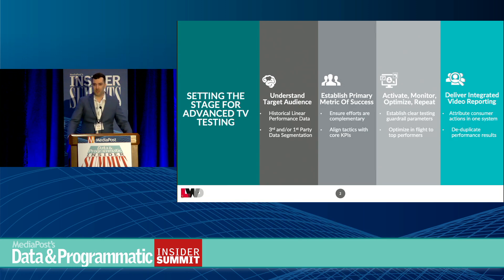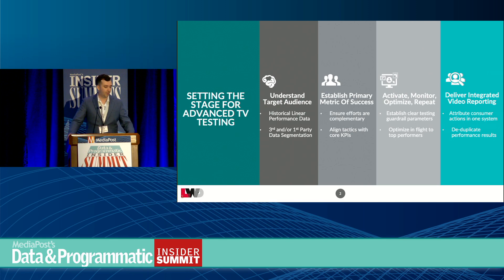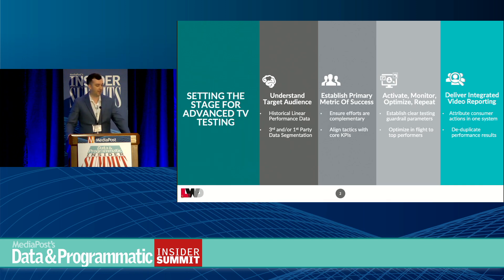Finally, just giving them a cohesive view of performance across linear and advanced TV efforts — getting that kind of view within one centralized report, one centralized data set, so they can really see that linear TV is driving XYZ, but including advanced TV on top of that is also driving performance in conjunction with it. We want to have that deduplicated performance view so they can see that the test is really working and driving incremental results.